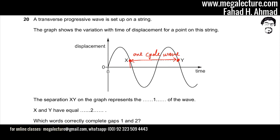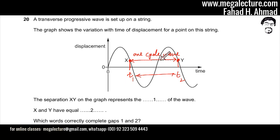This is t1 and this is t2, so this is the time axis. The distance between these two points represents the time it takes for one cycle of the wave, or one wave to pass — that is the time taken for one wave to pass, which is called the time period.